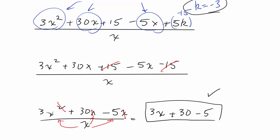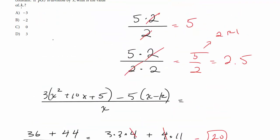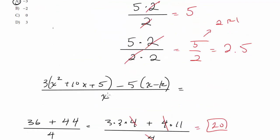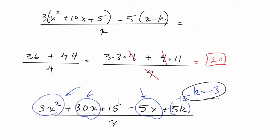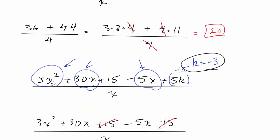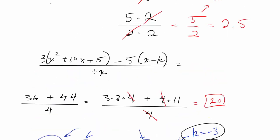So that means k is going to have to be negative 3, which means our answer here is A, such that this constant term, this term without the x cancels, and we're just left with terms with an x, so that x can divide into each of them equally. So this one is choice A.